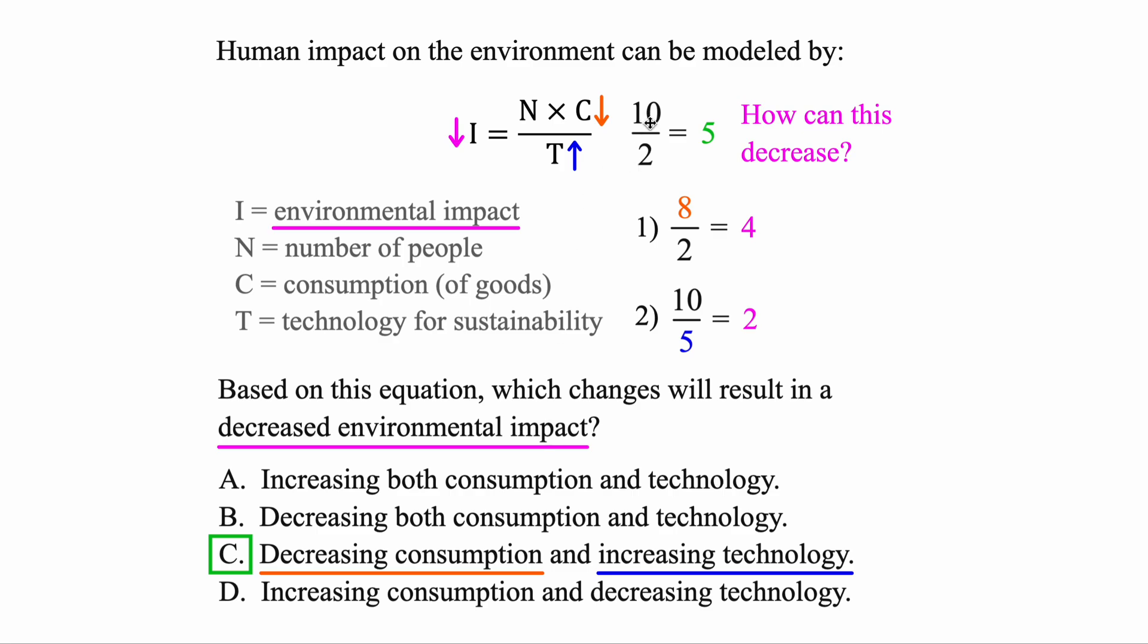So that's it. Just by coming up with some numbers ahead of time, and then manipulating them, seeing what happens when you change them, then you can find out what needs to occur for a whole function to decrease here.